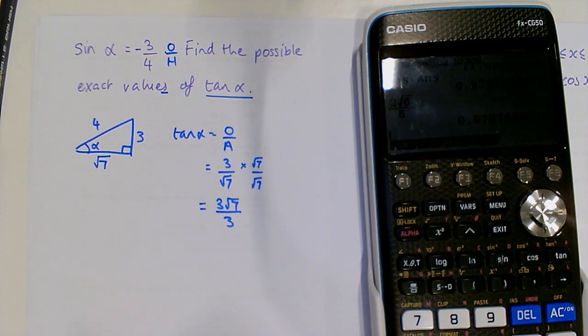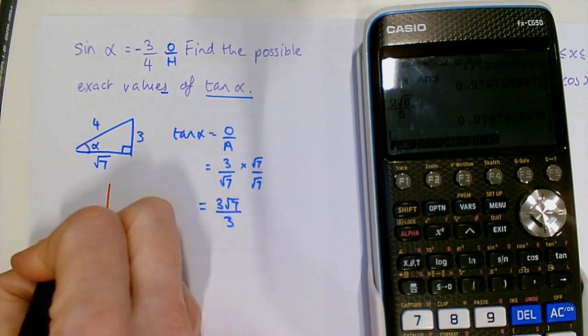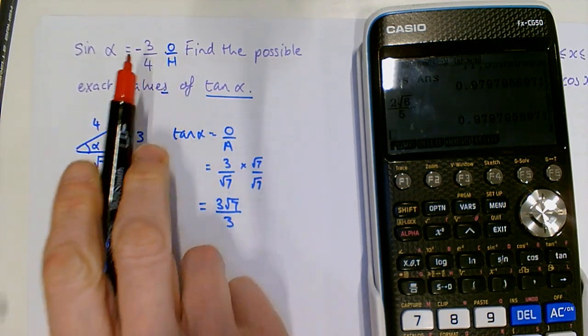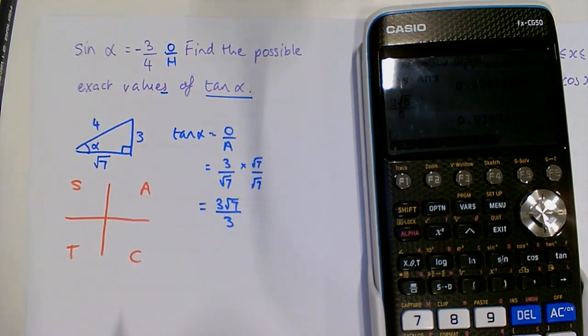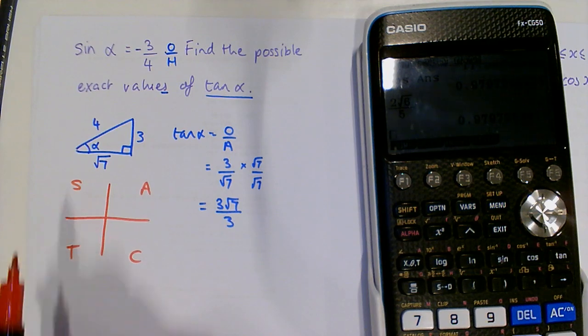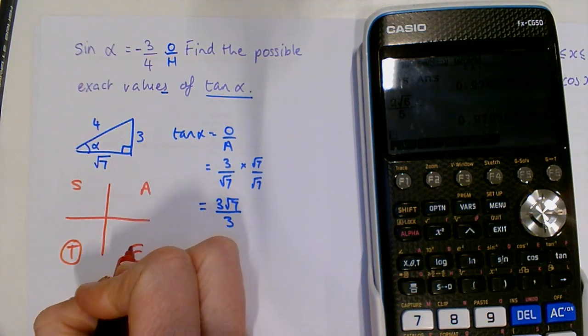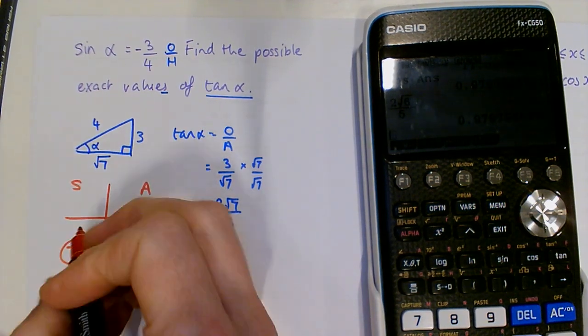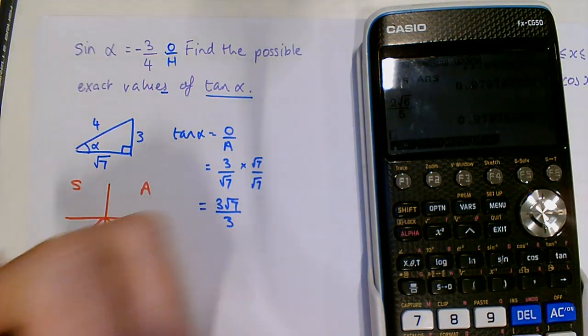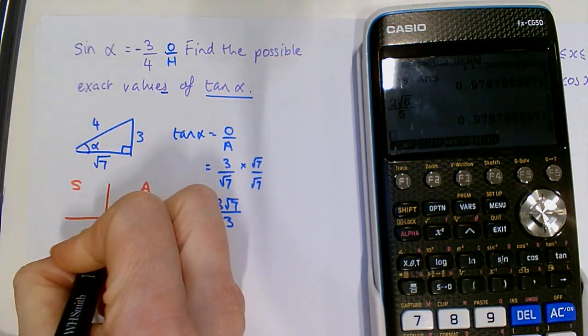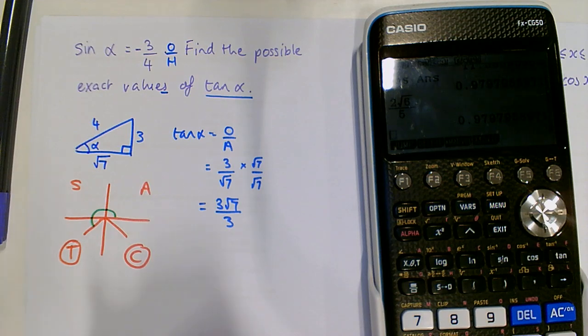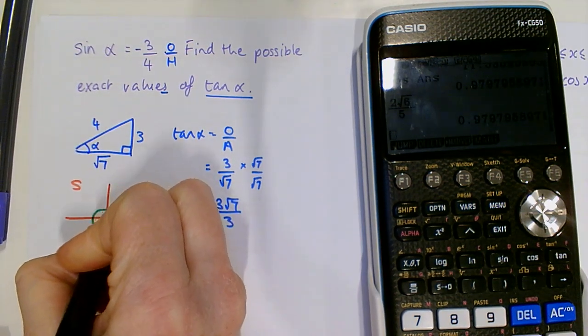So to find out where these possible values come in, we draw ourselves a nice CAST diagram. We know this time that sine is negative. So it can't be here where everything's positive. It can't be here where sine is positive. It must be either here or here. So our angle, theta, could either be this angle here or we could have this angle here.